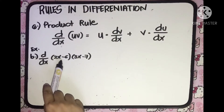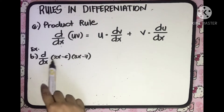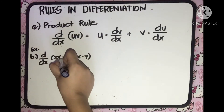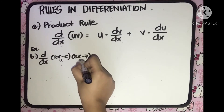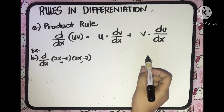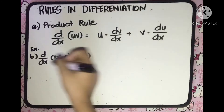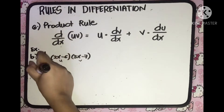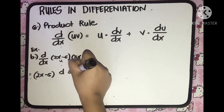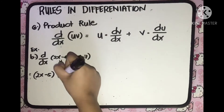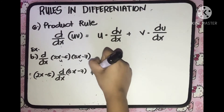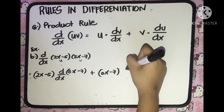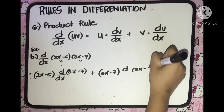For the second example of the Product Rule, we have the derivative of (2x minus 5) multiplied by (3x minus 7) with respect to x. The value of u is 2x minus 5, and the value of v is 3x minus 7. Following the Product Rule: 2x minus 5 multiplied by the derivative of v, which is 3x minus 7 with respect to x, plus v, which is 3x minus 7, multiplied by the derivative of u, which is 2x minus 5 with respect to x.